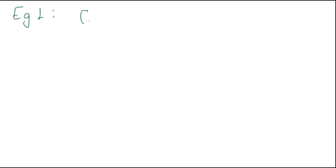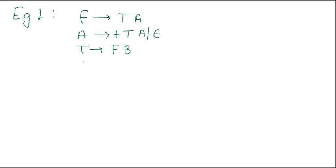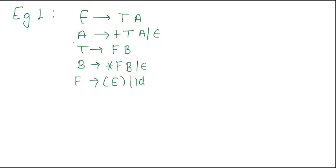Here we have example one. We have a given grammar: E → TA, A → +TA | epsilon, T → FB, B → *FB | epsilon, and F → (E) | id. Now we have to calculate the First set for this example.